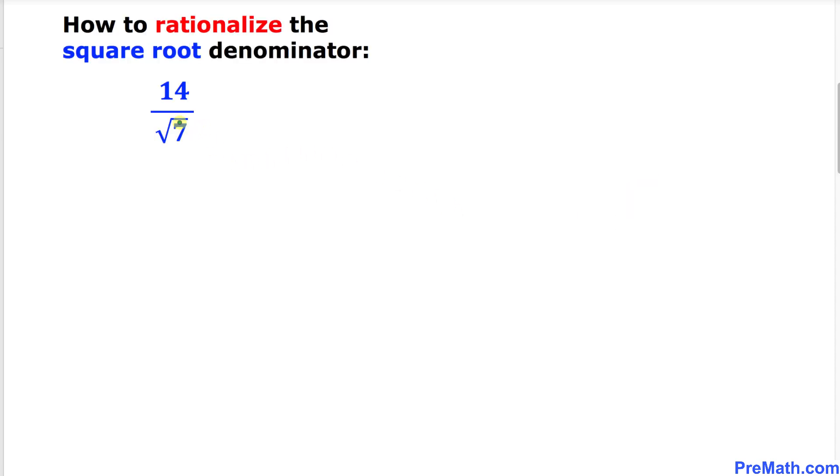Before we proceed, let's go over how to rationalize the square root denominator as you can see in this example. Here in the denominator, whenever we have a square root, by default our index is 2.